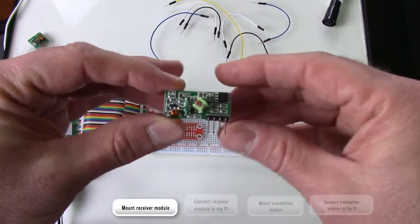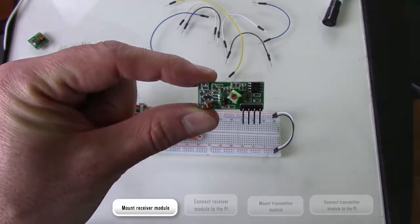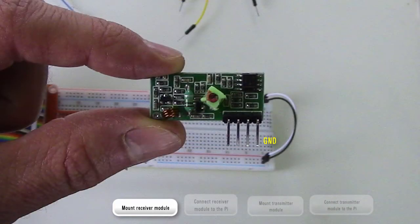Let's take a quick look at the receiver module. It has four pins: ground, supply voltage or VCC, and two data pins which are used to communicate with the Pi.